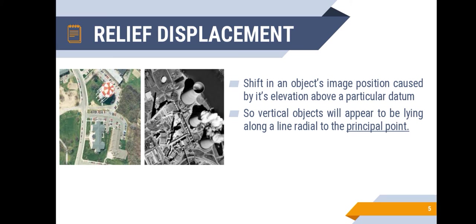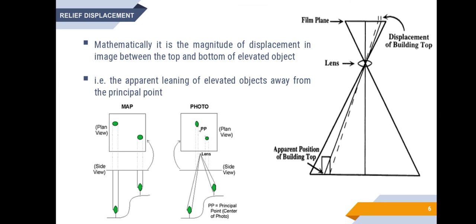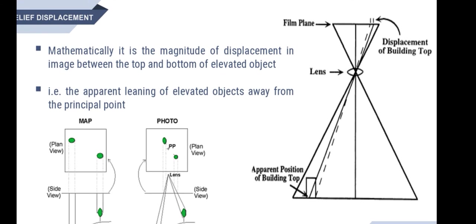In the two images shown here, we can see this phenomenon. That vertical structure — the water tank and the chimney — is photographed on the film as if they are lying on that plane. Mathematically, it is the magnitude of displacement in image between the top and bottom of elevated objects. That is, relief displacement is the apparent leaning of elevated objects away from the principal point.